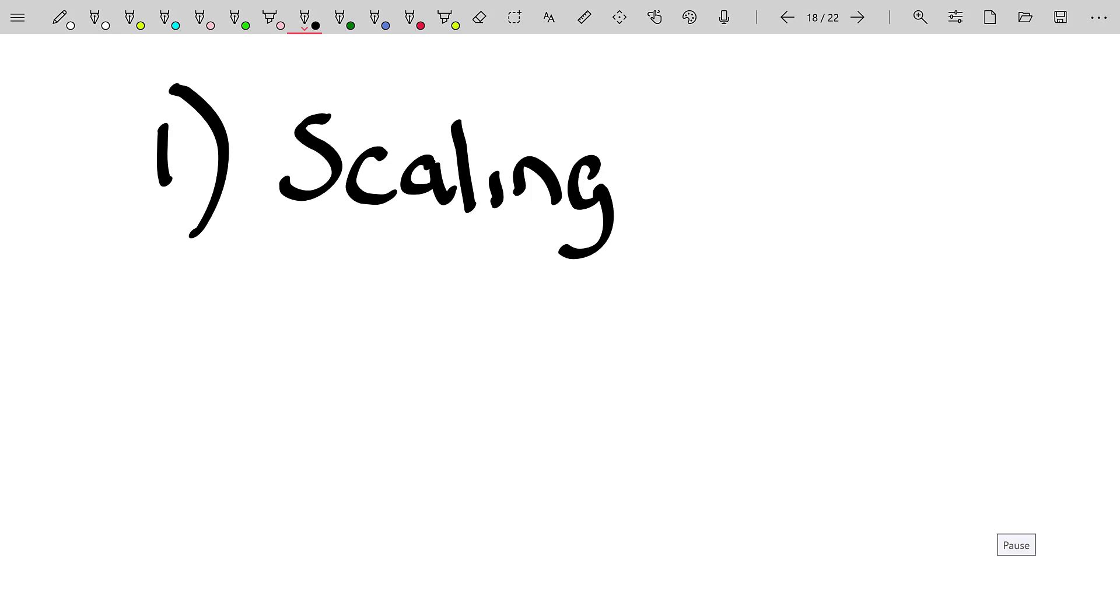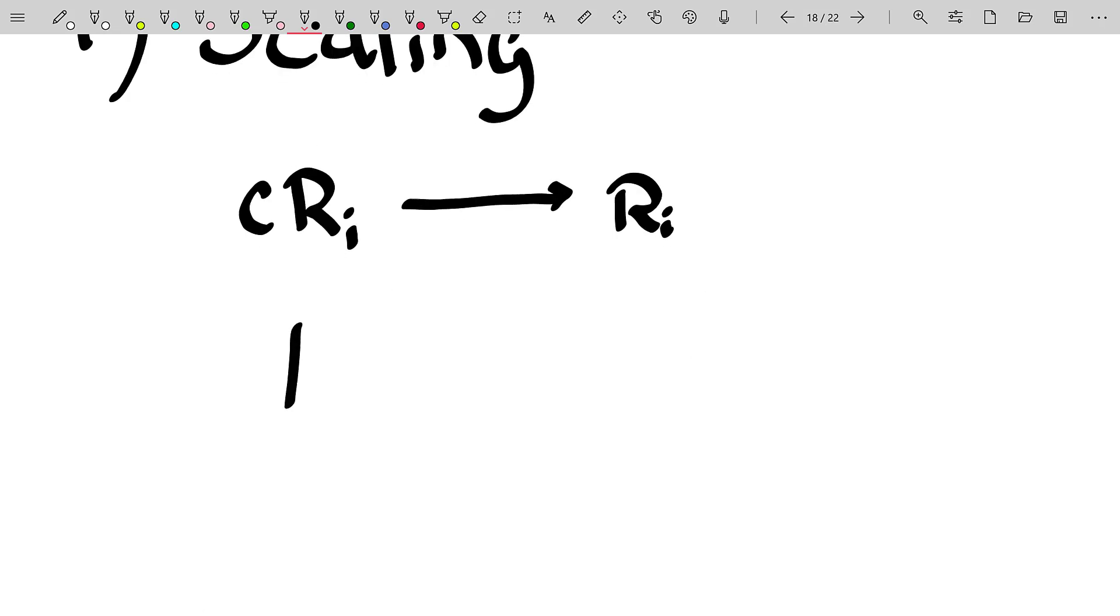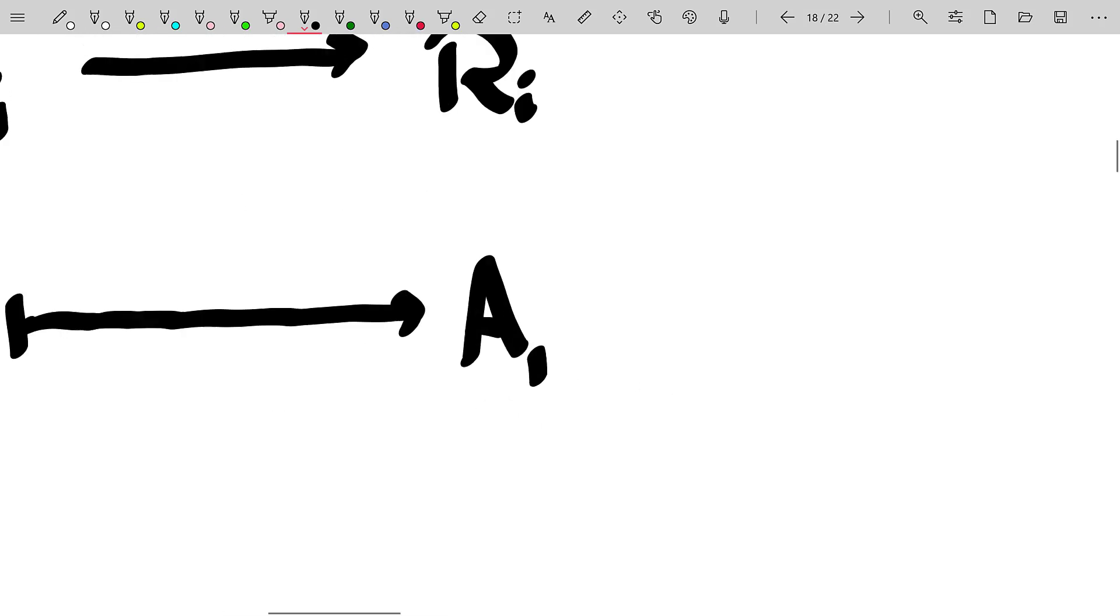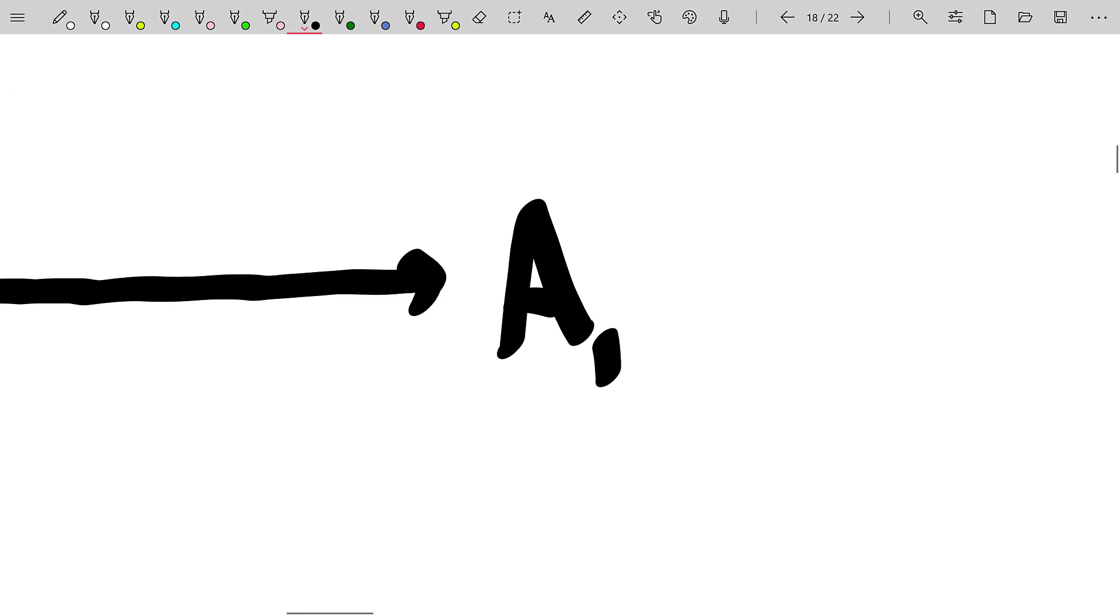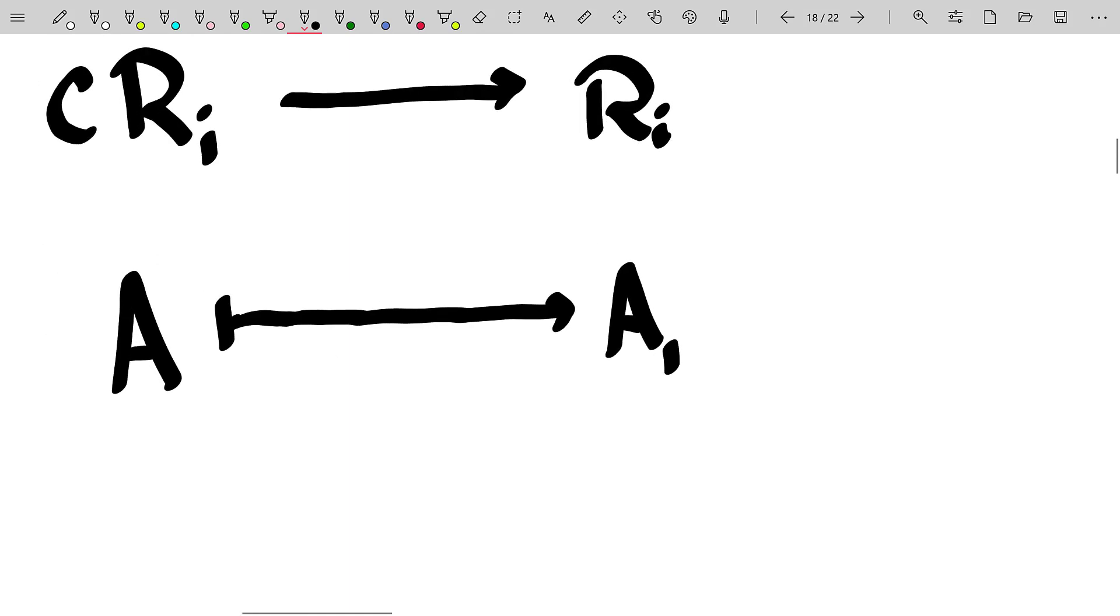So when we say something like, take a non-zero scalar C multiplied by row I to become the new row I for some matrix A. Well, that takes the matrix A and creates a row equivalent matrix we'll call A sub 1. What if we wanted to go backwards and take A sub 1 and arrive back at A? Well, we have to undo the multiplication of row I by the scalar C.